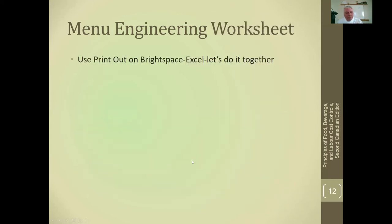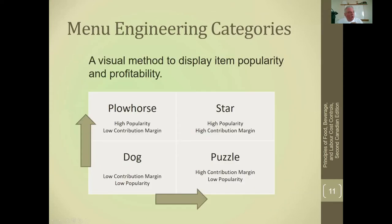Over here we have the plow horse - it's very popular, customers like it - so it's high for popularity - but it doesn't make us any money, so it's low for profitability. The public likes it, but as a business owner I'm not too happy with it because we sell a lot of it but don't make any money. The fourth option is the puzzle: it makes us a lot of money, I'm happy with that, but we don't sell any. If it makes us a lot of money but nobody buys it, it doesn't really help my business.